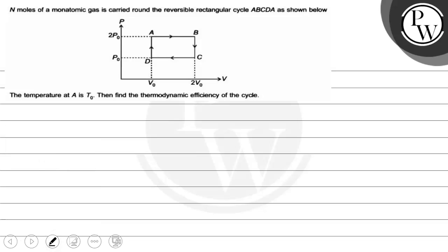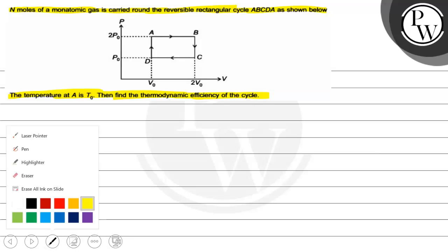Hello. Let's read the question. The question says that n moles of a monoatomic gas is carried around the reversible rectangular cycle ABCDA as shown below. The temperature at A is T₀. Find the thermodynamic efficiency of the cycle. So we will solve this question.